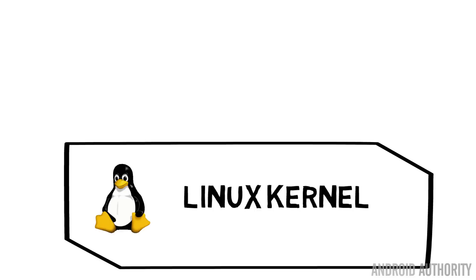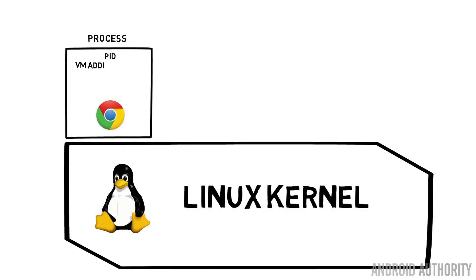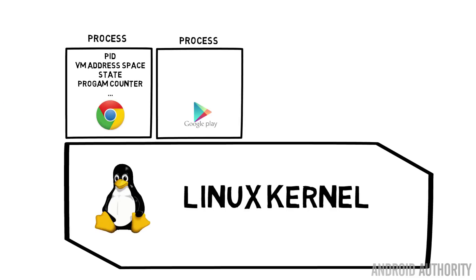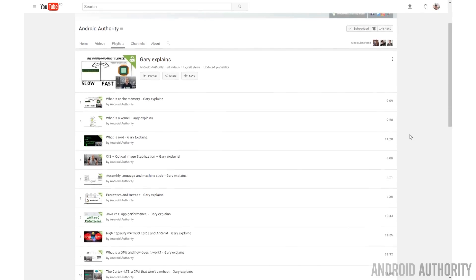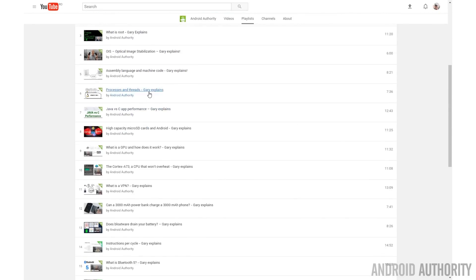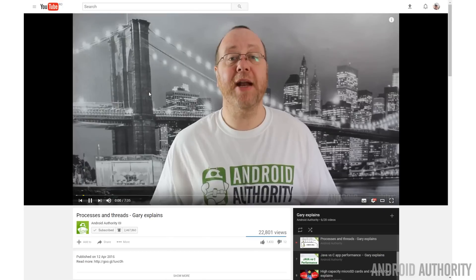At the very heart of Android is the Linux kernel. Inside Linux, all programs that run do so in a thing called a process. A process is a logical container that allows the kernel to know which programs are running, which memory is allocated to them, what priority they have, and how much CPU time they need. Basically, in Android, every app that you run actually runs inside a Linux process. I've done a whole video on processes and threads that you can find on the Android Authority channel, and there's a playlist of all the Gary Explains videos on the channel's front page.